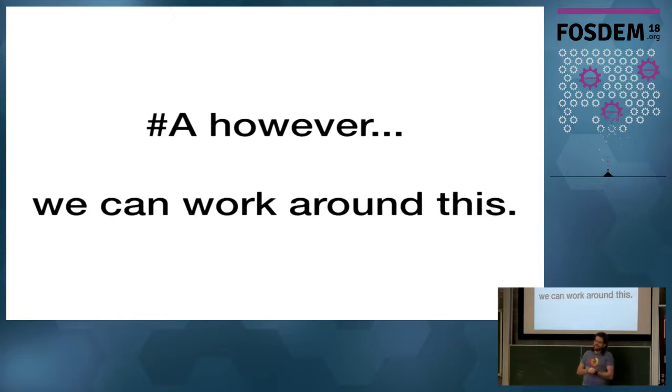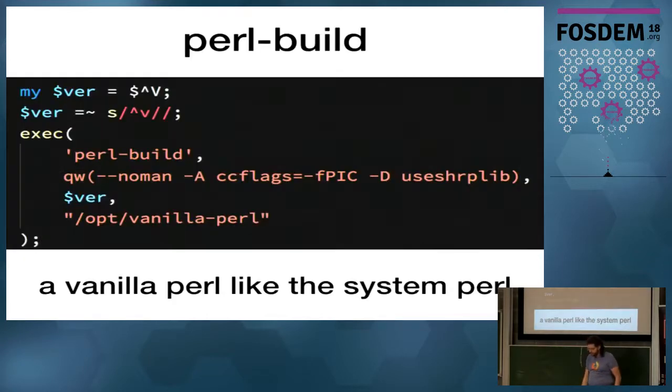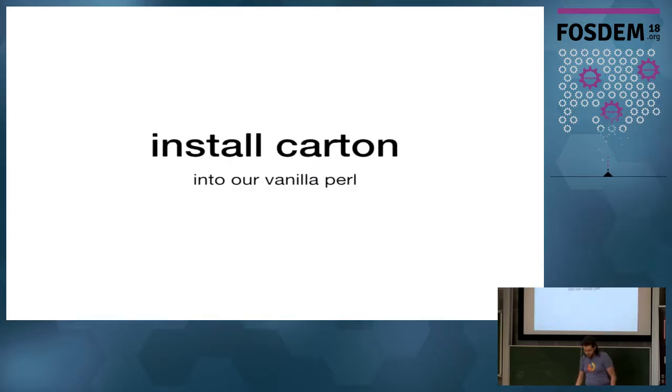However, you really shouldn't use the system Perl to, if you try to use the system Perl with Carton and install stuff, it's going to get confused. But you can fix this. So what you can do is you can build your own Perl that's the same version as the system one. So this is a script called Build Vanilla Perl, which I wrote. This is taking the Perl version number and running Perl Build on whatever that version is.